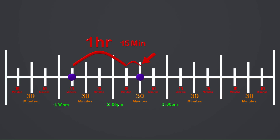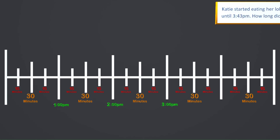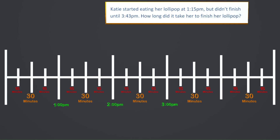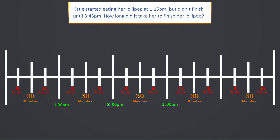Let's bring in a word problem and see how the number line helps us. Here is a word problem that says Katie started eating her lollipop at 1:15pm, but didn't finish until 3:43pm. How long did it take her to finish her lollipop?